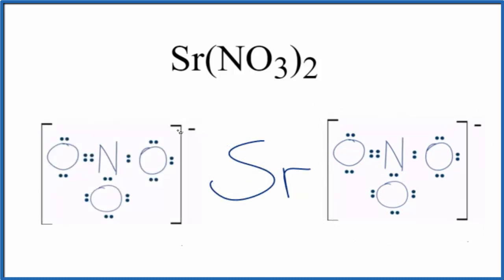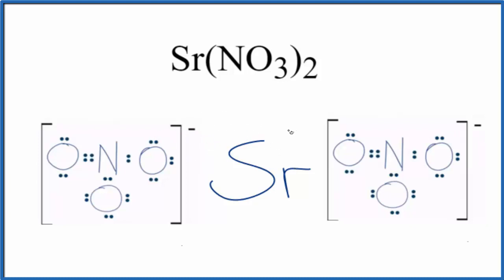The nitrate ion, NO₃, has a negative ionic charge. Since we have two of them, that's two minus. These negative charges — the electrons came from the strontium, so it lost two electrons, one to each nitrate ion.